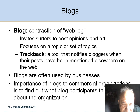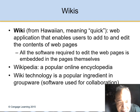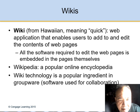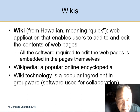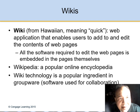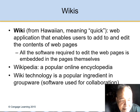Wikis came from the Hawaiian word for 'quick.' A wiki is a web application that enables users to add and edit content on web pages. An example is Wikipedia — but you have to be careful because not everything written on Wikipedia is true; some of it is just made up.